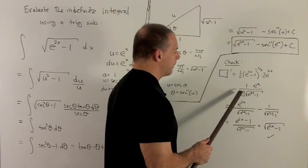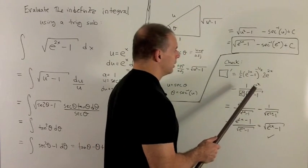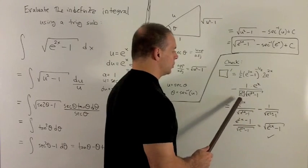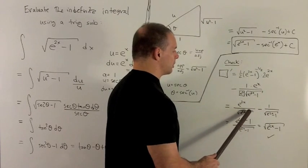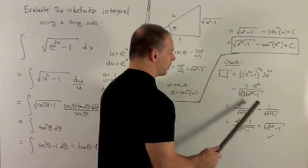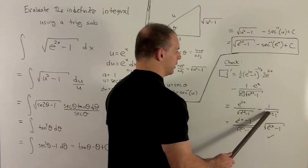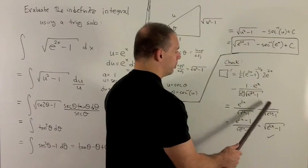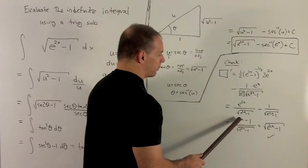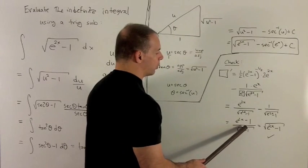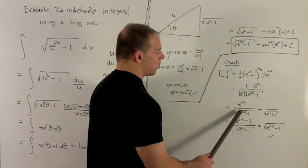Now, the e to the x's go away, leaving me with, from the first one, e to the 2x over radical e to the 2x minus 1. From this term, we're getting minus 1 over radical e to the 2x minus 1. Put it together, we have e to the 2x minus 1 over the square root, so two square roots here.